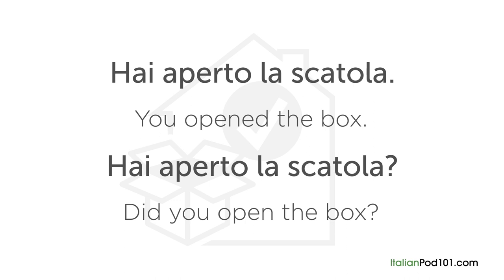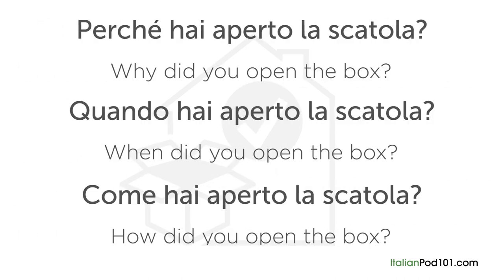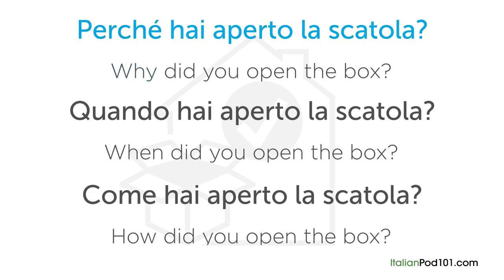If you want to be more specific, simply add the question word in front of the question. For example, 'perché' means 'why': 'Perché hai aperto la scatola?' 'Quando' means 'when': 'Quando hai aperto la scatola?' And 'come' means 'how': 'Come hai aperto la scatola?' Now you know how to create questions in Italian.